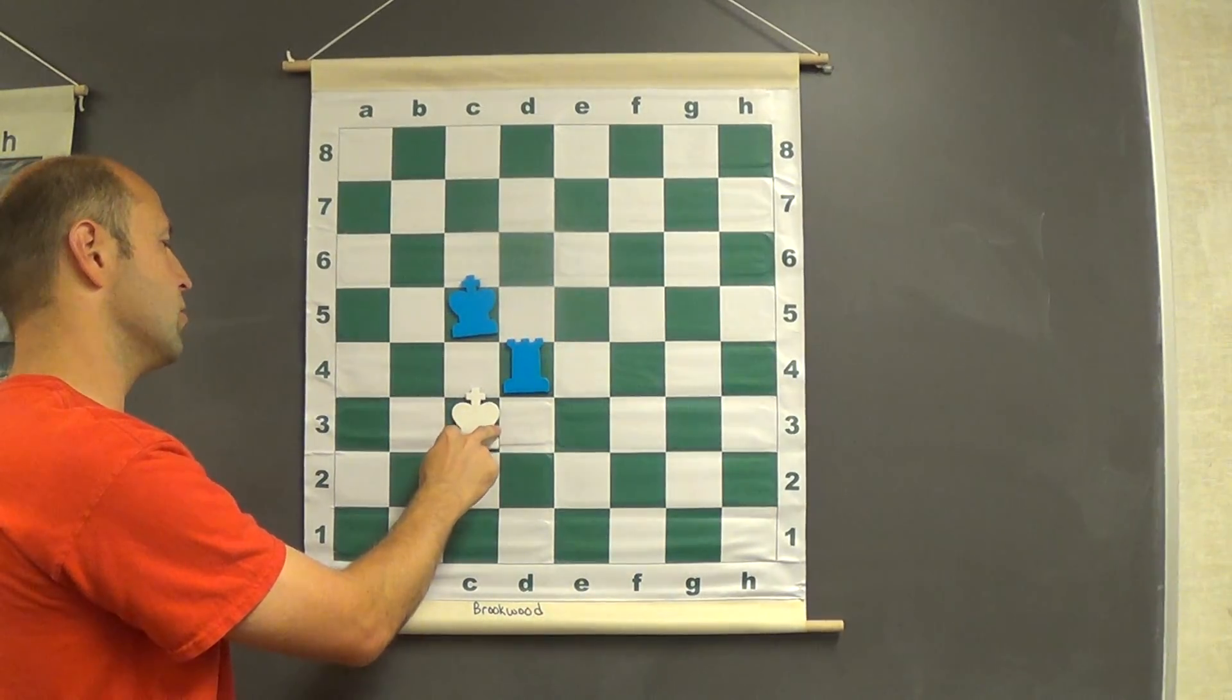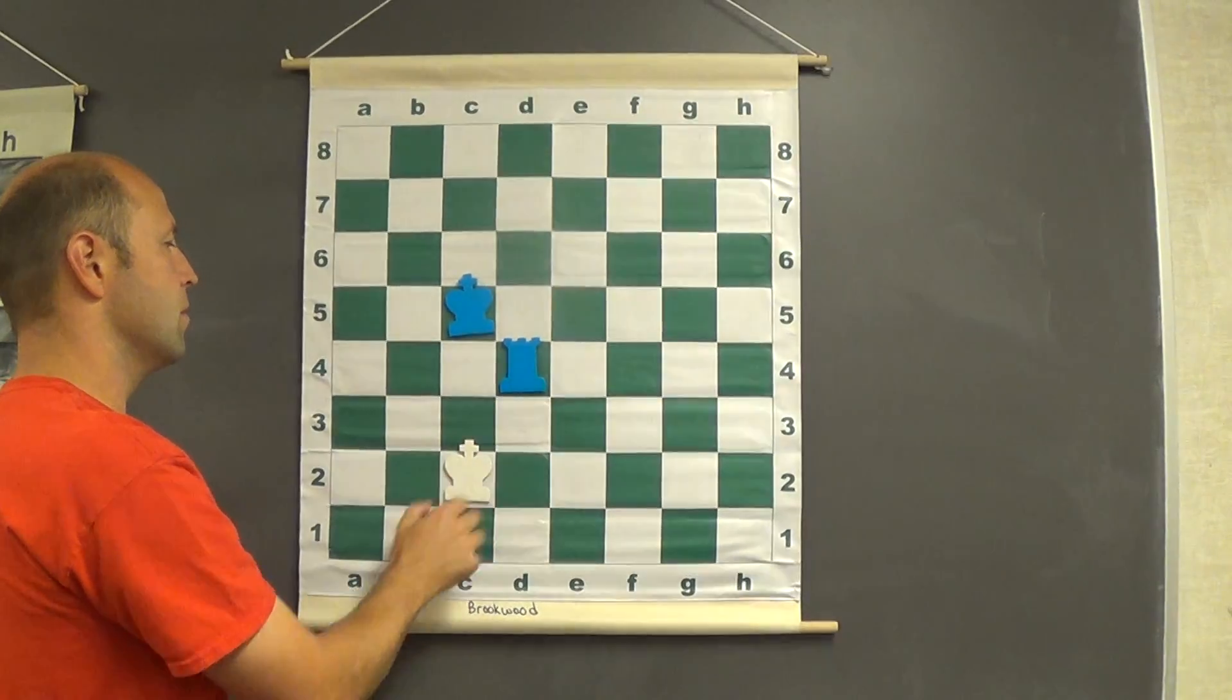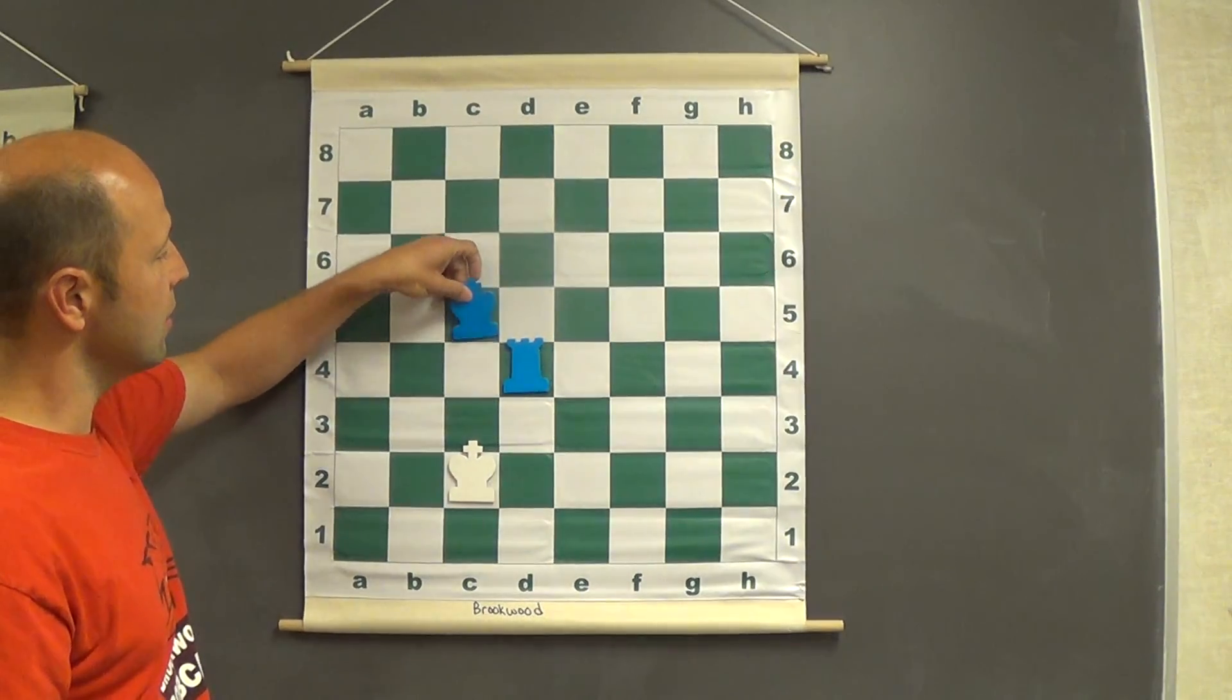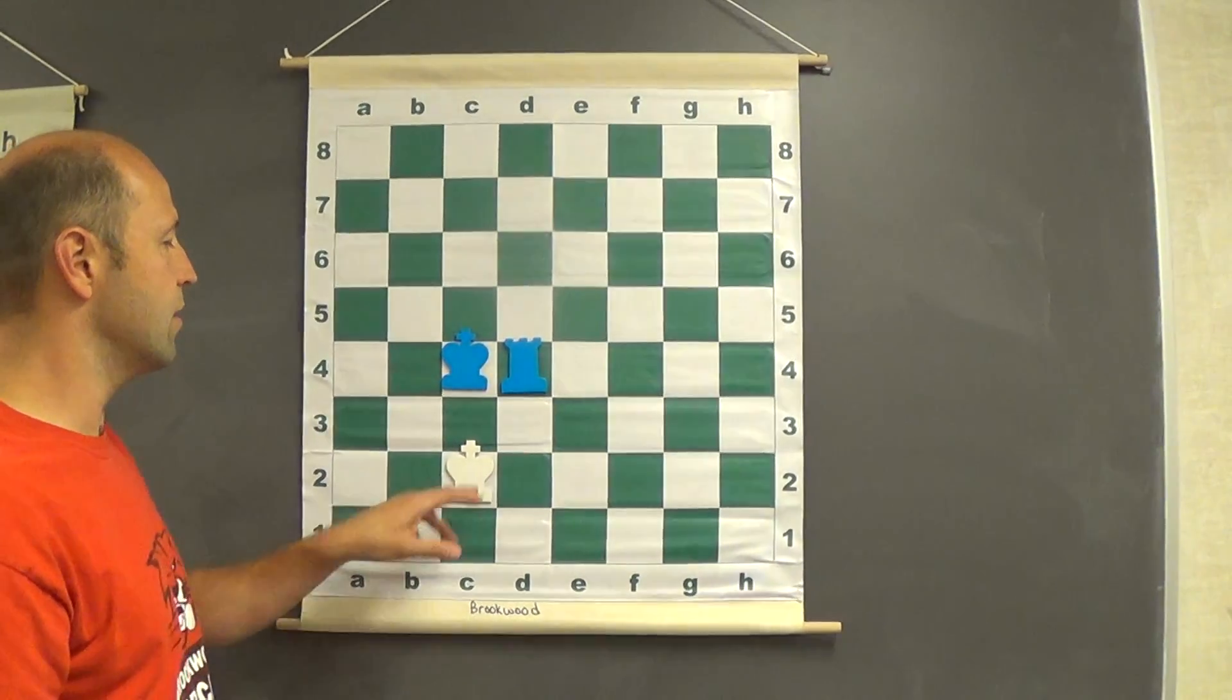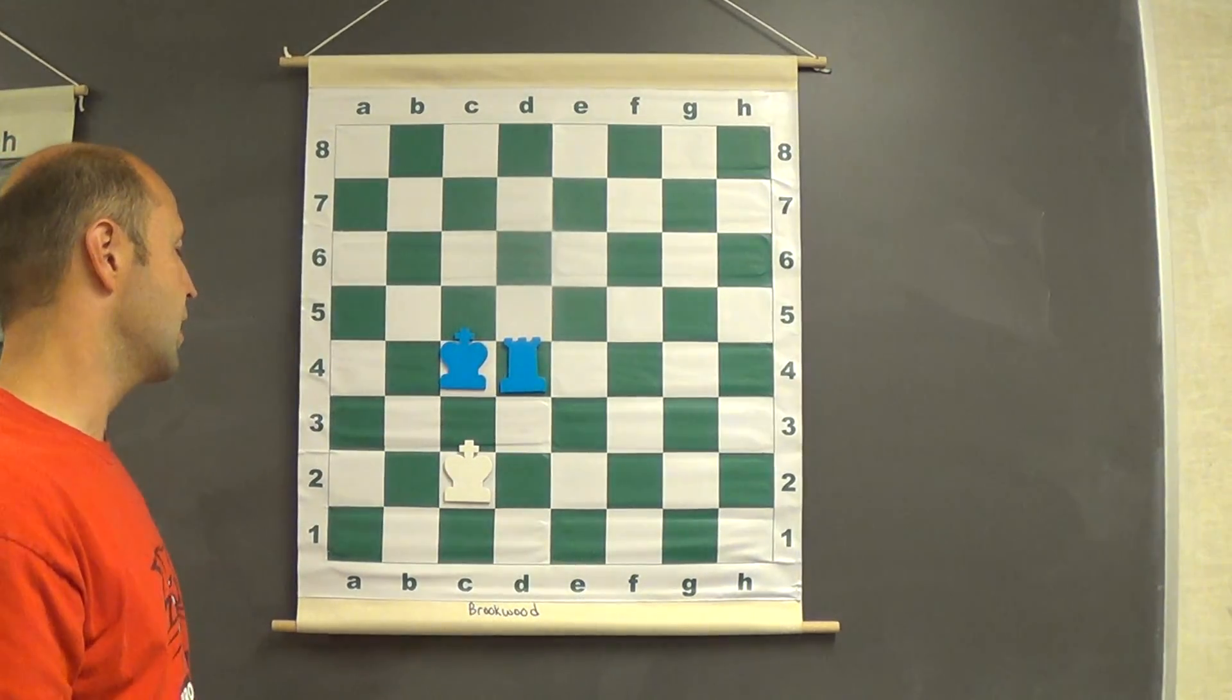White then has to choose. If white goes backwards, we end up pushing the king down. You notice they still stay together as buddies. Still a nine square house. White is doing his best job to stay out of checkmate here.